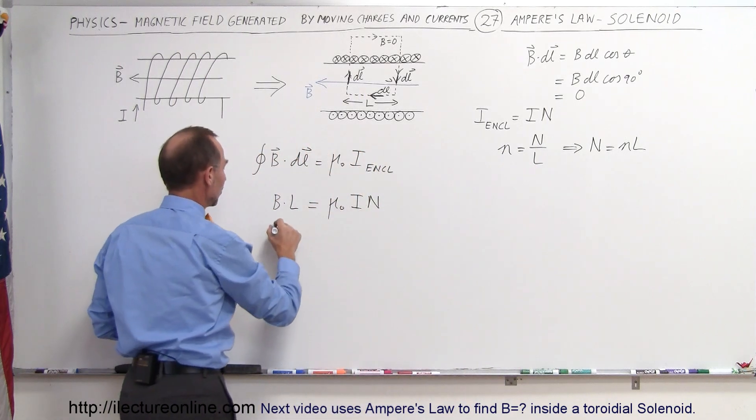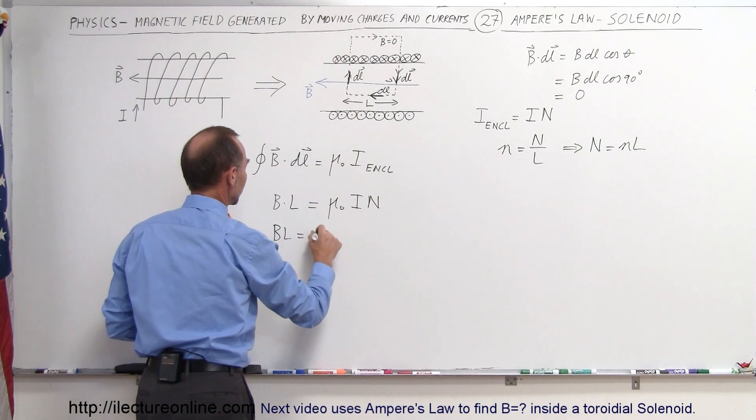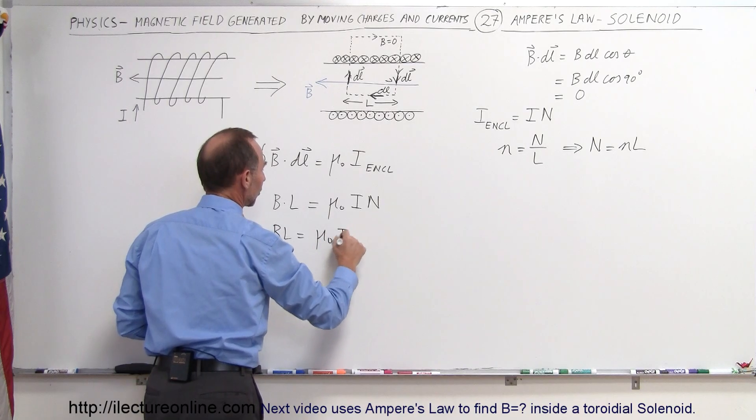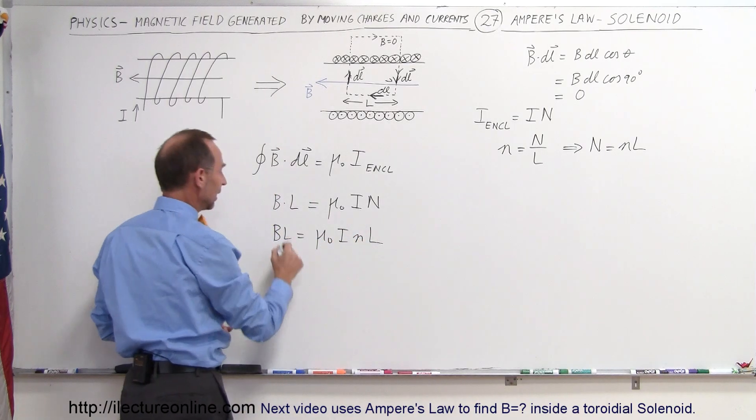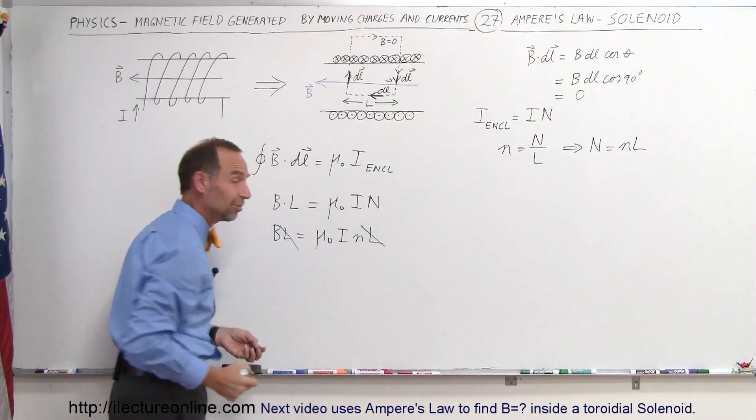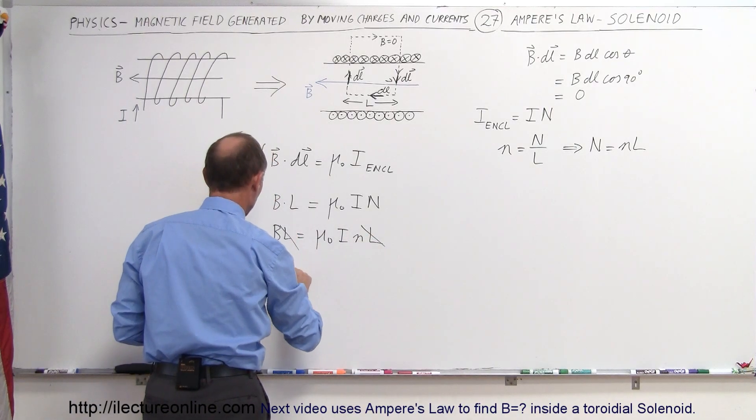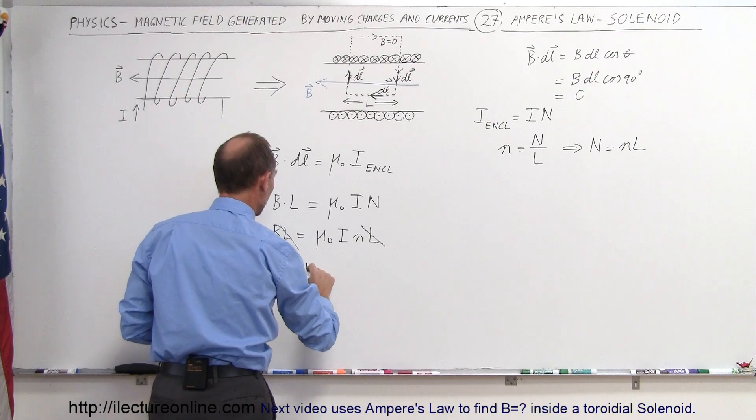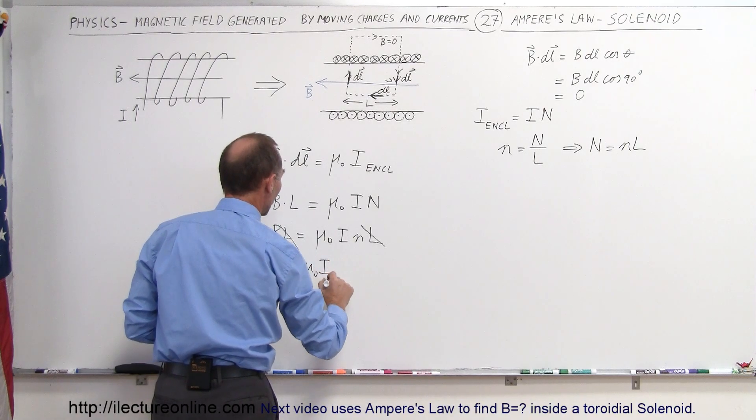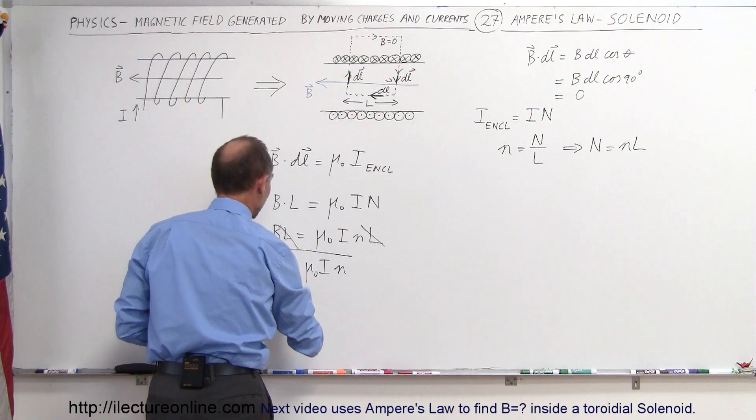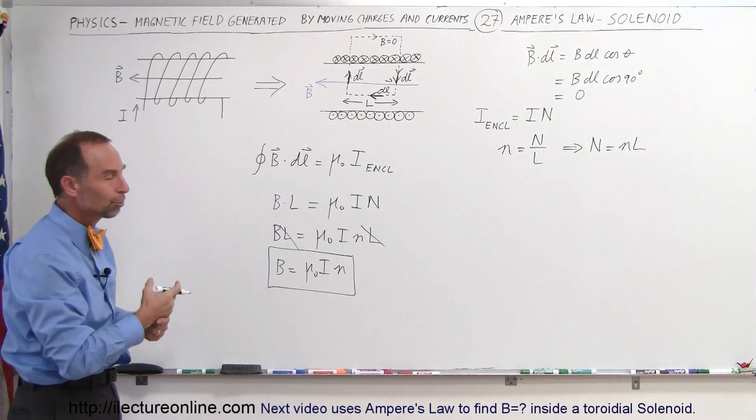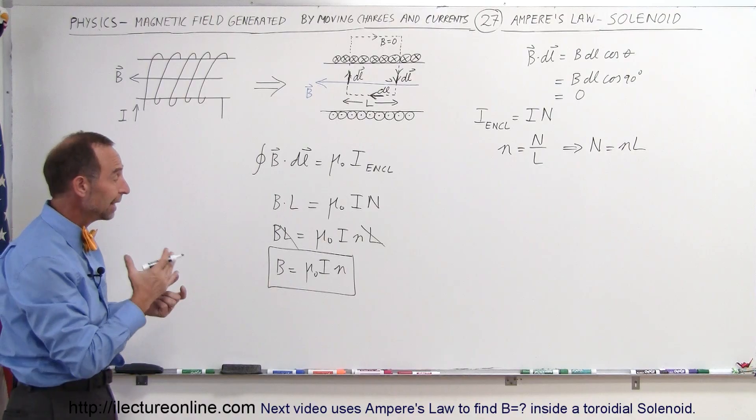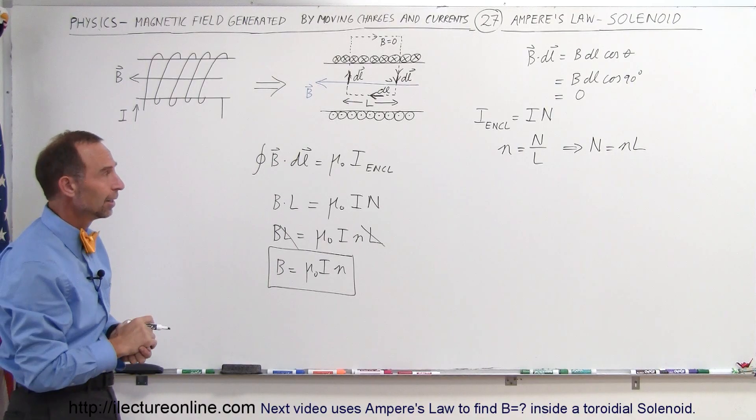So we can then write the equation as B times L is equal to μ₀ times the current in the wire times N times L. And then the L's cancel on both sides of the equation. So finally, the strength of the magnetic field B is equal to μ₀ times the current in the wire times the line density, or the wire density, the number of wires per unit length. And that's the magnetic field inside a coil.